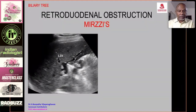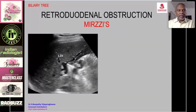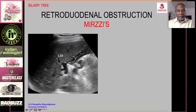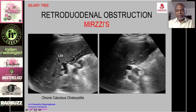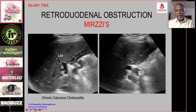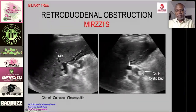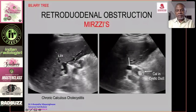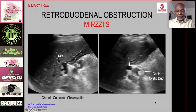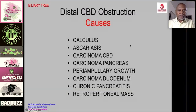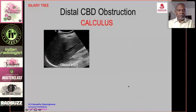A rare cause of obstruction at the common duct and hilum is Mirizzi's disease. Here you see a contracted gallbladder with calculi, a dilated common duct, and just distal to the porta hepatis a calculus in the cystic duct with fibrosis involving and obstructing the common duct.